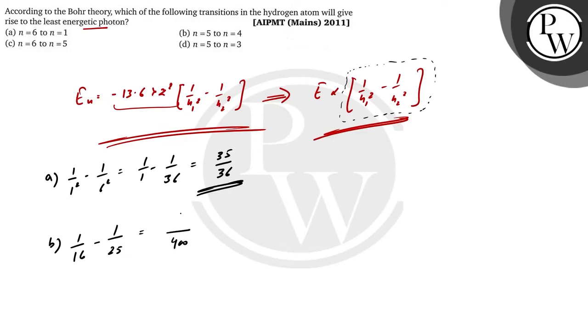Now we will find the value. 1 over 25, this will be 9 upon 400. So into 16, this will be 9 upon 400, 15 is 11.